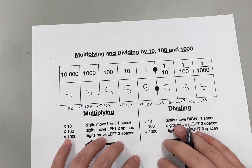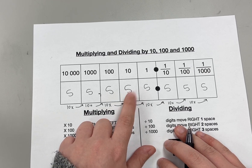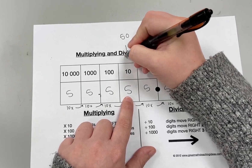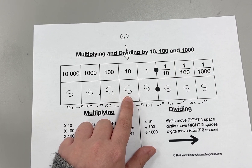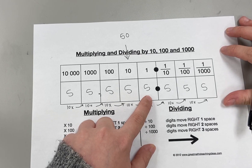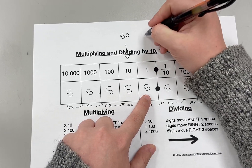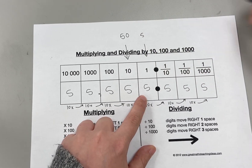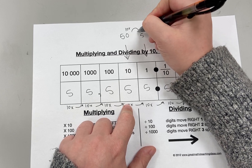Let's say I ask you the value of the five in the tenths place. The value of the five in the tenths place is 50. Now we're comparing it to the value of the five in the ones place. The five in the ones place is five. Fifty is ten times bigger than five.